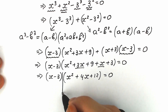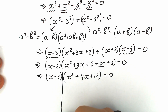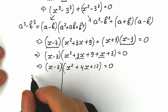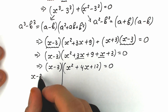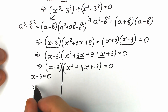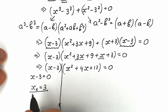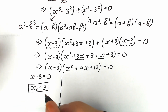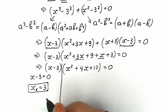A product of two parentheses equals zero when either the first or the second equals zero. Setting x - 3 = 0 gives x₁ = 3. This is the most popular solution — the one many students find by inspection, saying 'obviously x equals 3.'